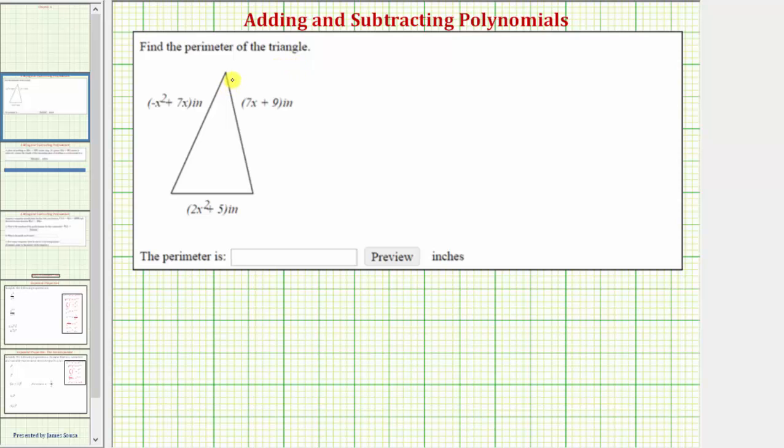Notice in this case, the length of each side of the triangle is given as a polynomial, or more specifically, a binomial, which means the perimeter P of the triangle is equal to,